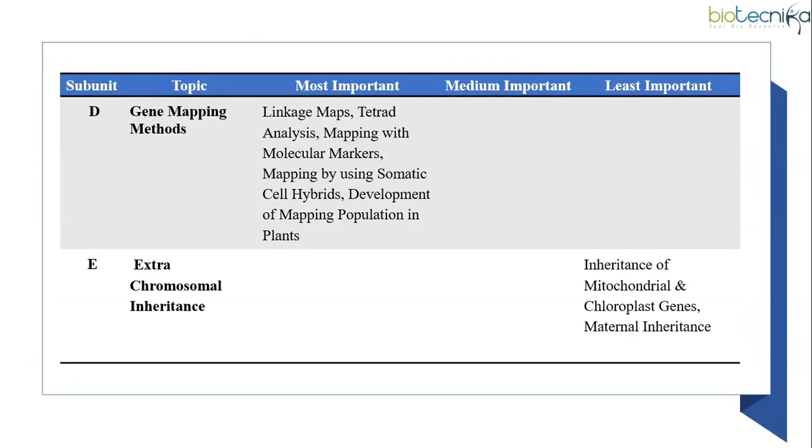Now, let's know about subunit D, gene mapping methods. Very important subunit from this unit. You can see this subunit covers most important topics. You may expect questions on gene order, recombination frequency, coefficient of coincidence and interference. Statement based, numerical based or combination based questions are expected from linkage maps. Even questions can be asked from tetrad analysis that is ordered and unordered tetrad analysis. Usually numerical based questions are expected. Statement and figure based questions on physical and genetic maps can also be asked. Sometimes questions can be asked on deletion mapping and somatic cell hybridization as well.